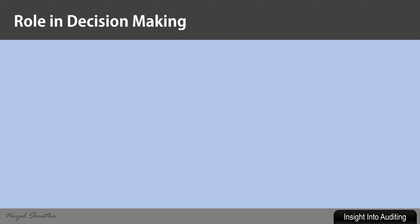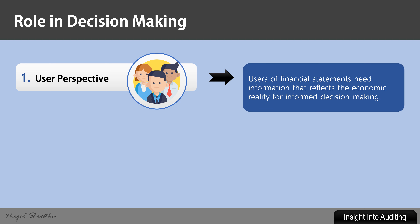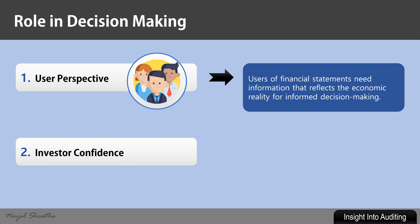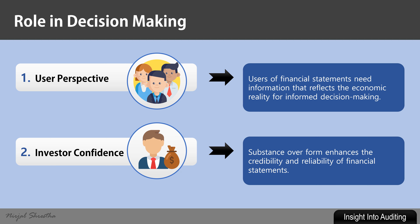What is the impact of substance over form on decision-making? The first impact is from an end-user perspective, wherein users of financial statements require information that reflects the economic reality for informed decision-making. The second impact is on investor confidence — substance over form enhances the credibility and reliability of financial statements.